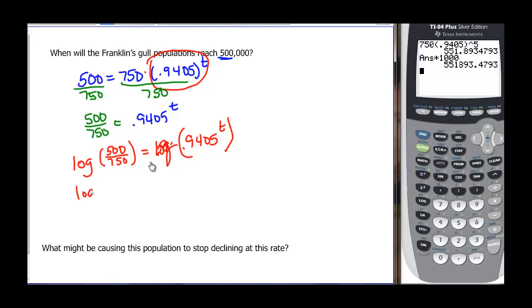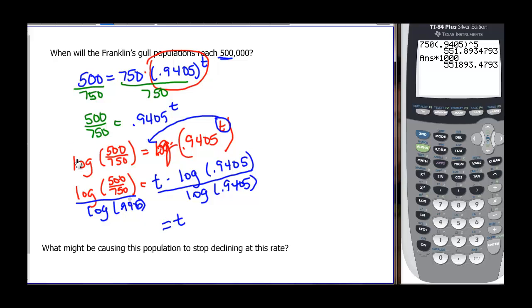We rewrite this. The side stays the same because it's just a number. Log of 500 over 750 is going to be equal to, and we bring the exponent down in front of that log, so t times the log of 0.9405, and we divide.